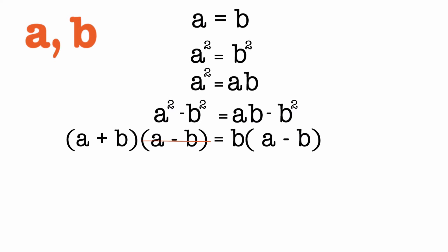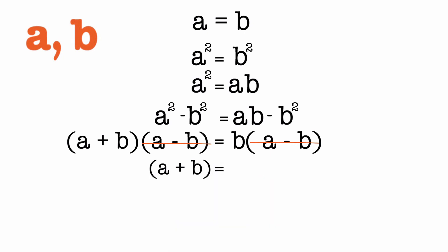Now since we have A minus B on both sides, we can just cancel them out. So we are left with A plus B is equal to B.